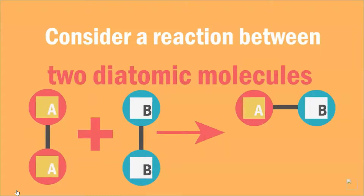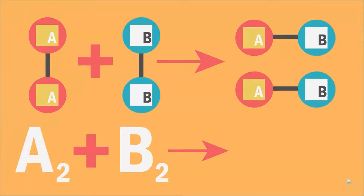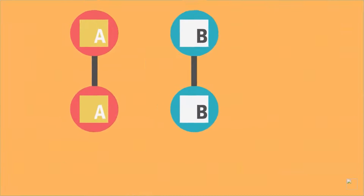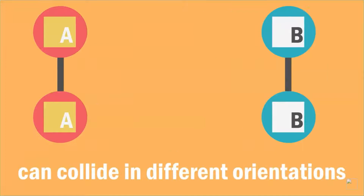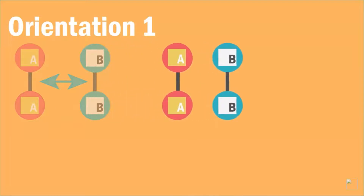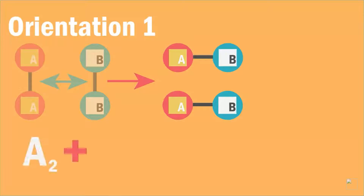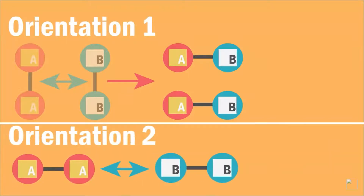Consider a reaction between two diatomic molecules A₂ and B₂ to give two molecules of AB. These two diatomic molecules can collide in many different orientations. In orientation one, the two diatomic molecules A₂ and B₂ are in the correct orientation to react. In orientation two, they are not, and so no reaction occurs.